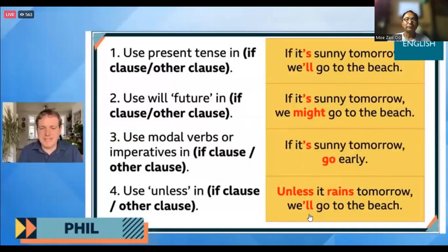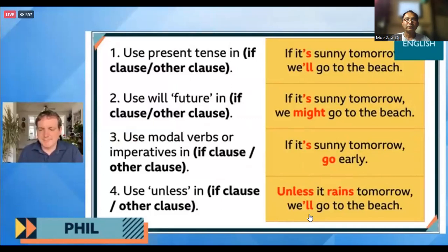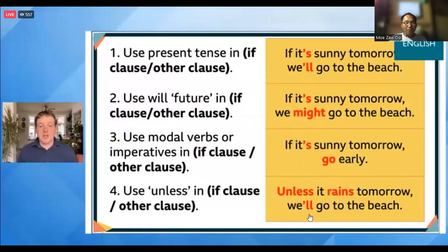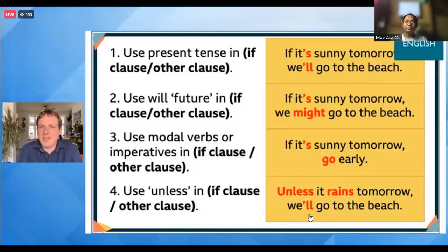We've looked at what we use it for. Let's have a quick look at how we make it. When you have a conditional sentence, we often think about it as having two clauses - two halves. We have the 'if clause', which has 'if' in it, and we have the 'other clause'. We're going to use those terms today. So thinking about this first conditional, we use the present tense.